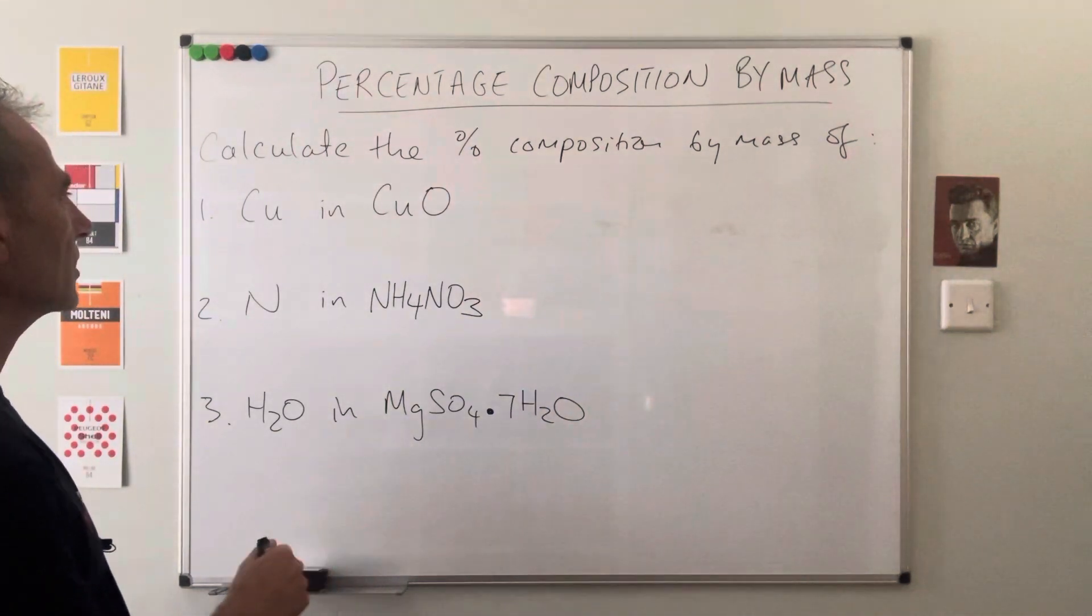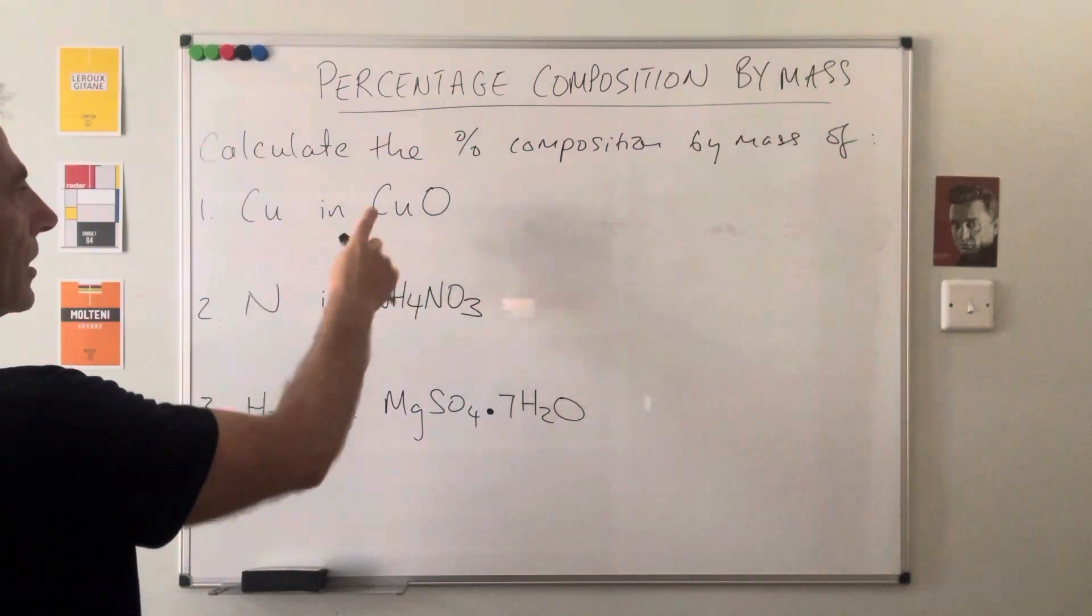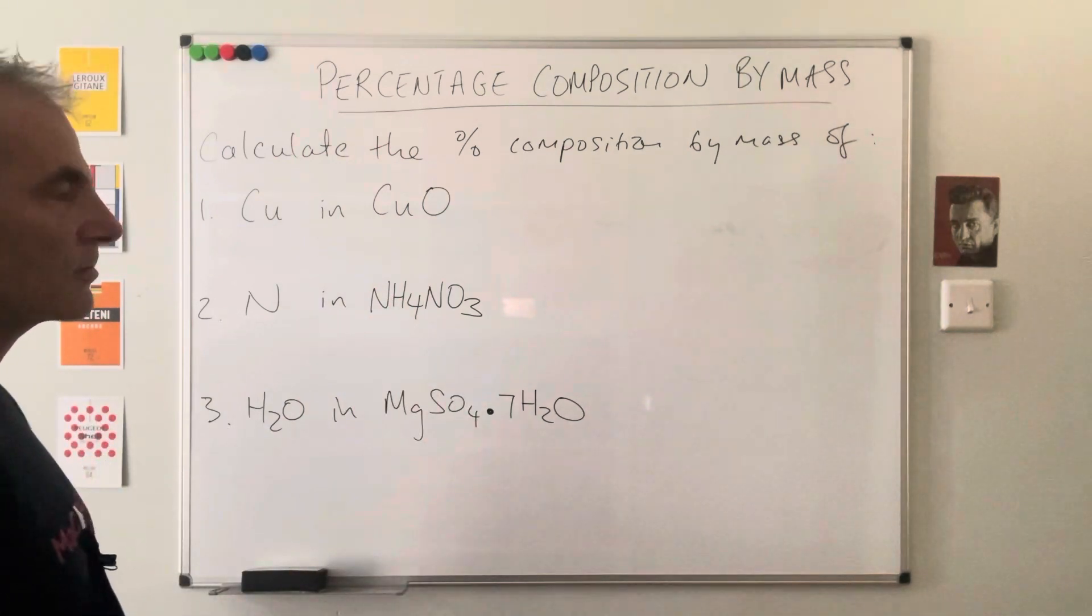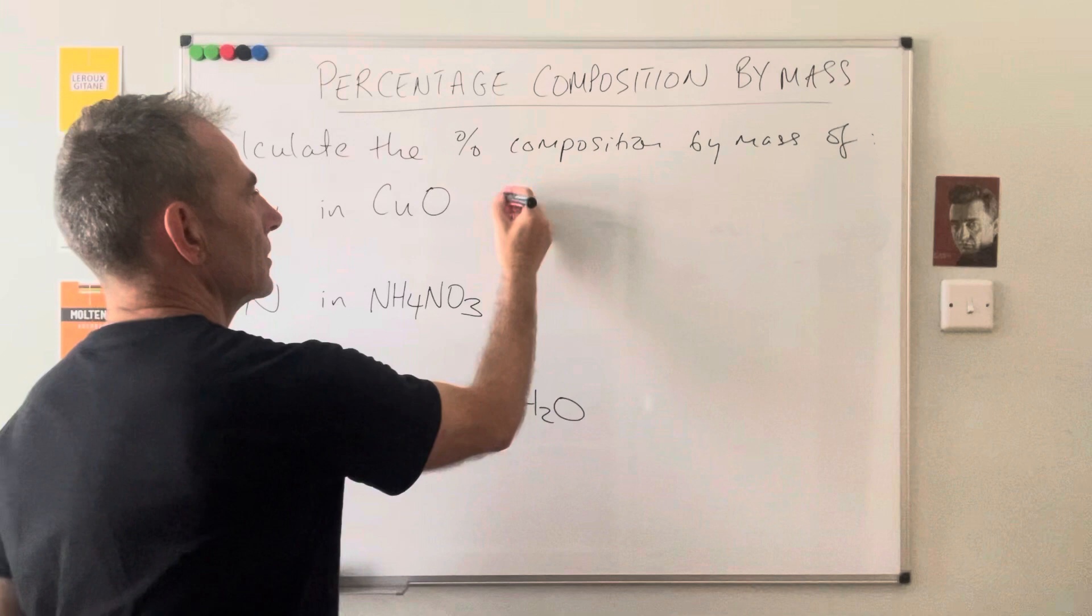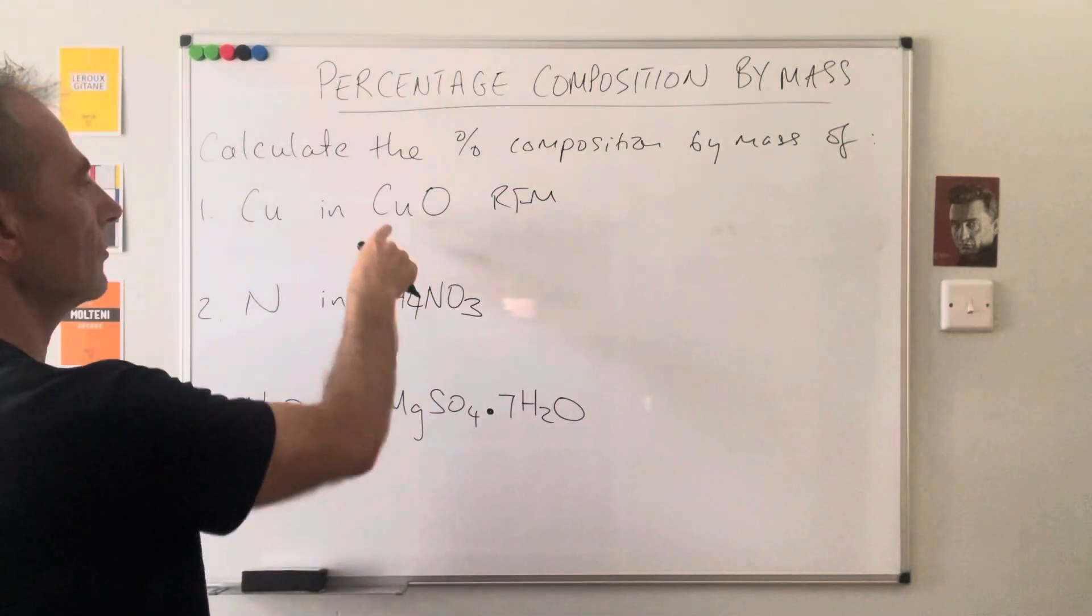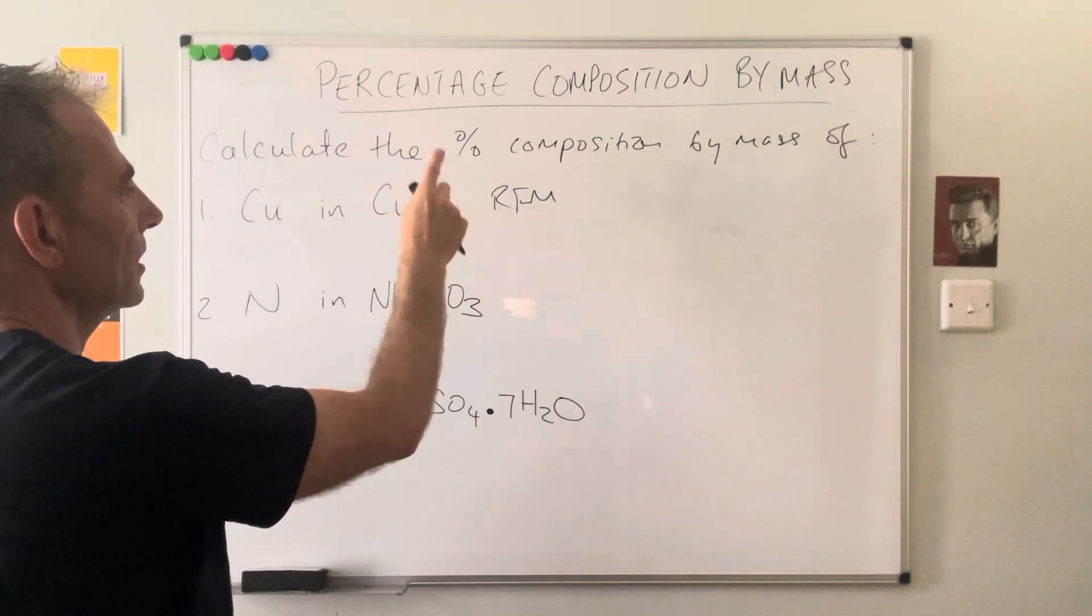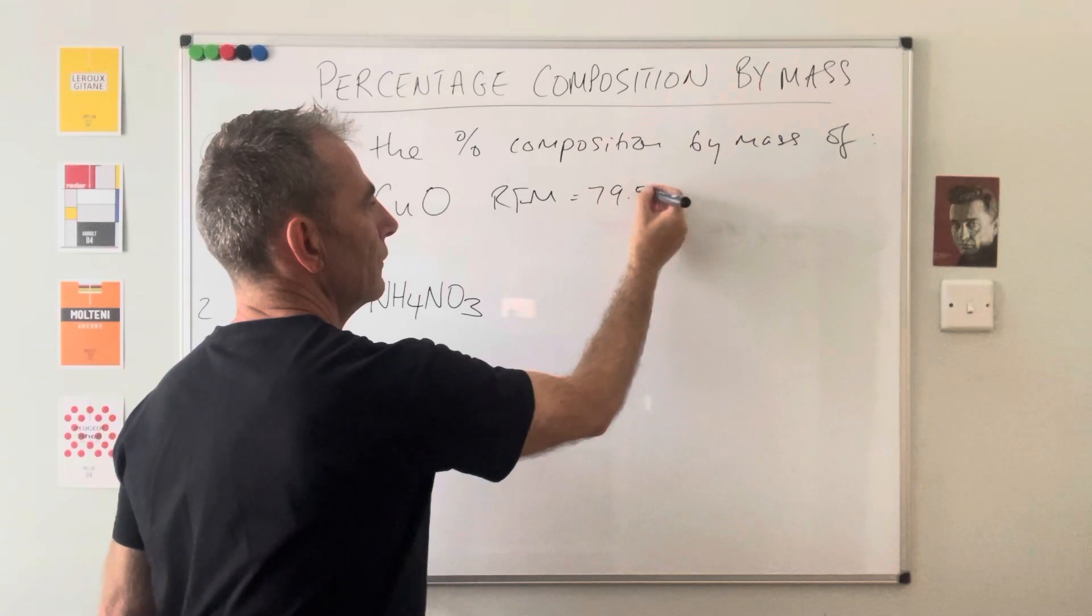For the first question, we've got to calculate the percentage composition by mass of copper in copper oxide. So the first thing we need to do is work out the formula mass, the mass of the whole thing. We've got one copper and one oxygen, so it's 63.5 for the copper, 16 for the oxygen, so that's 79.5.